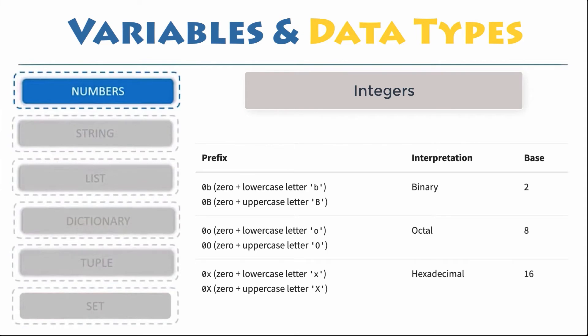Python interprets a sequence of decimal digits without any prefix to be a decimal number. But the following strings can be prepended to an integer value to indicate a base other than 10.